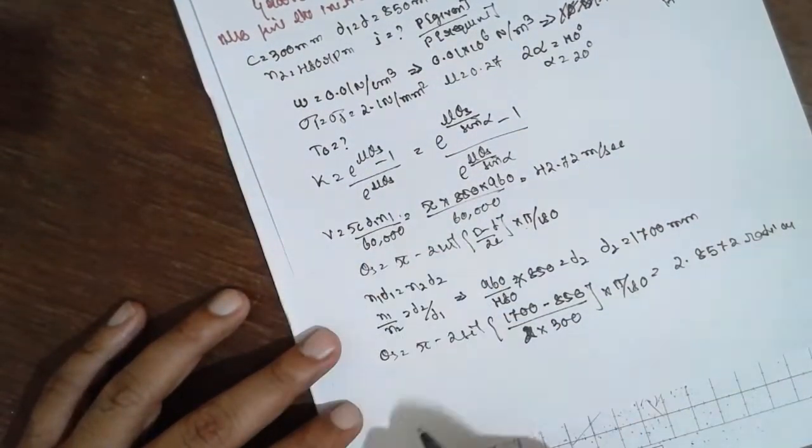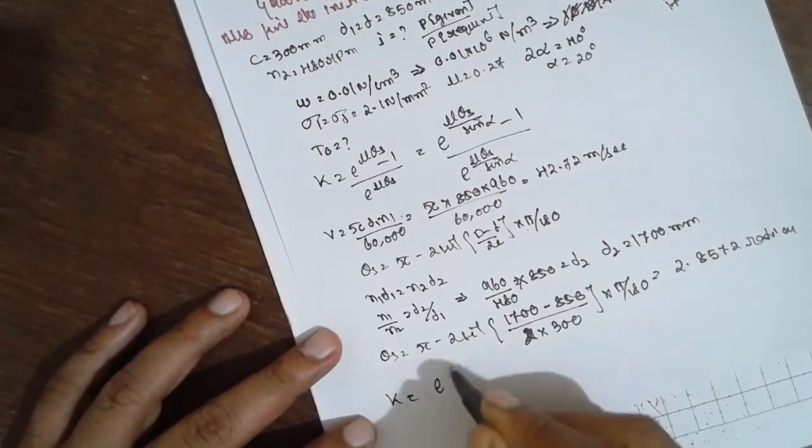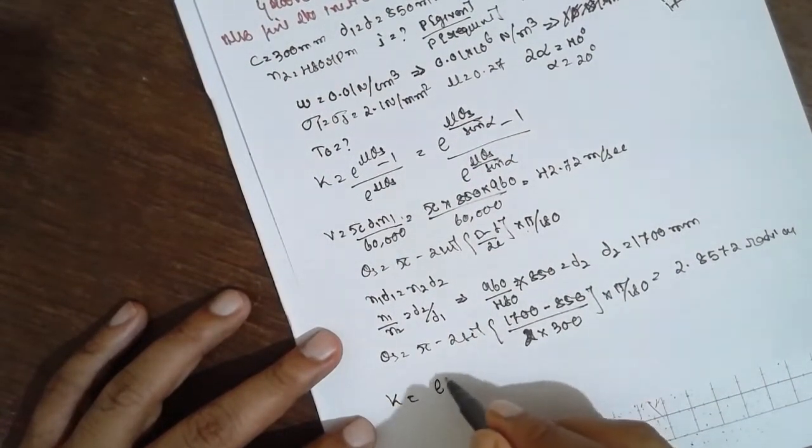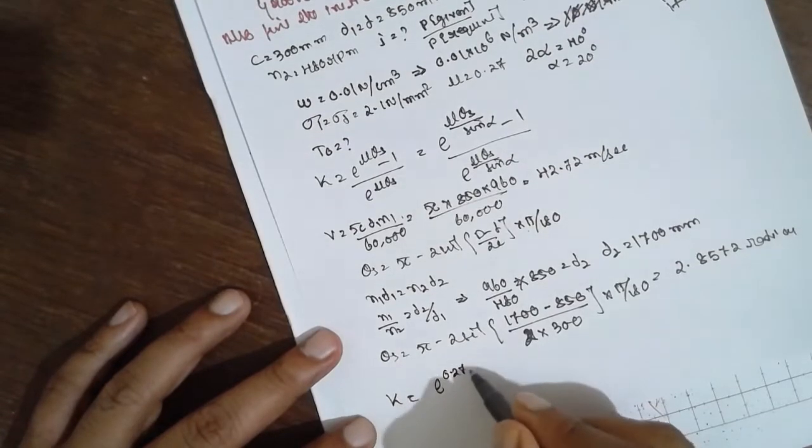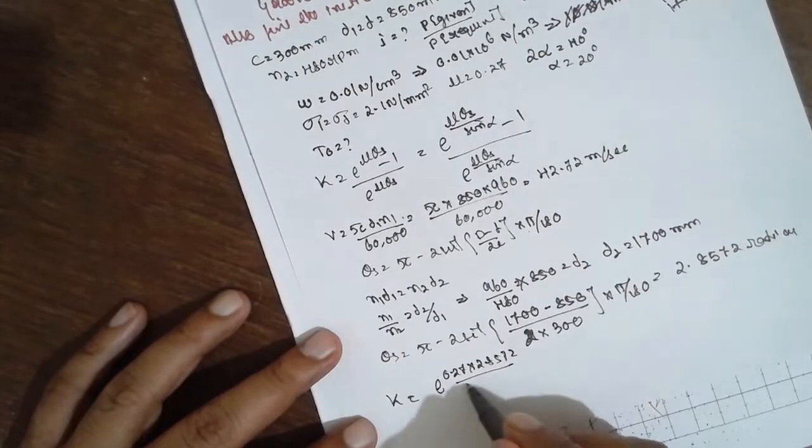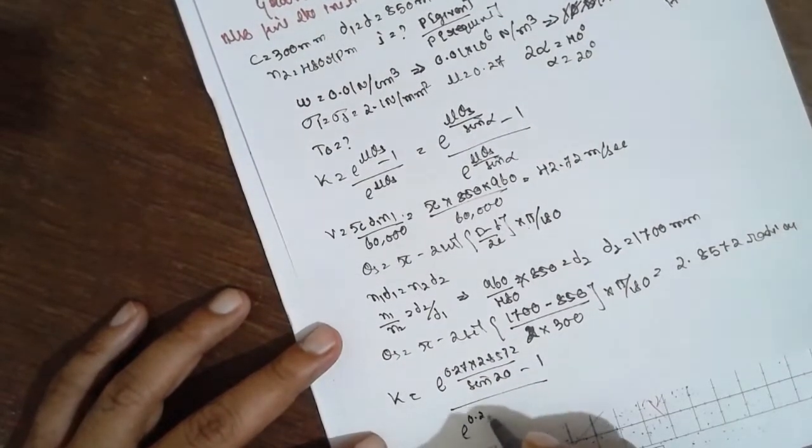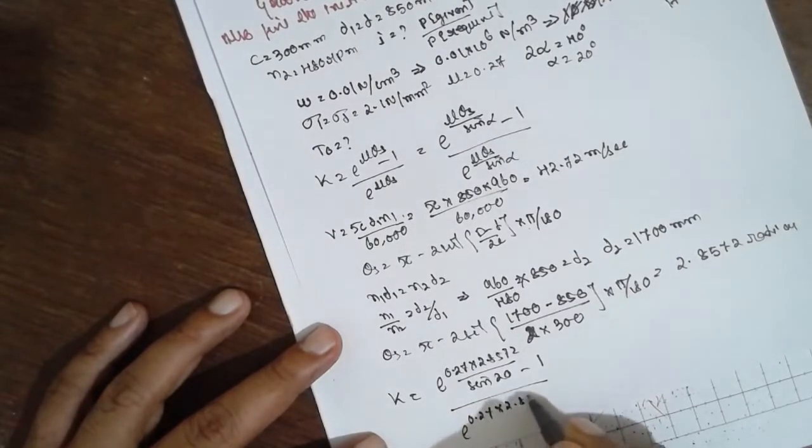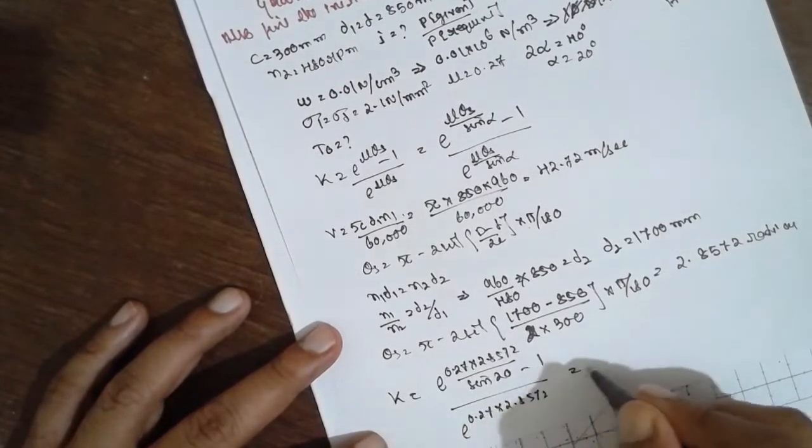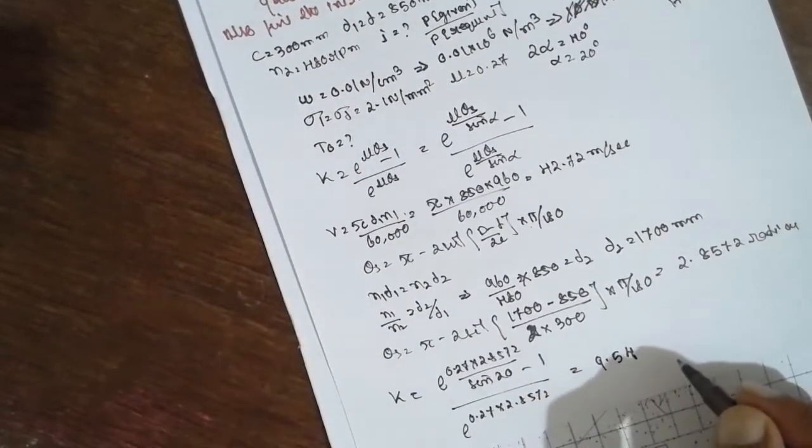After getting this value, find out the K here. K is equal to [e^(0.27*2.8572/sin(20°)) - 1] divided by e^(0.27*2.8572). The answer will be 9.54.